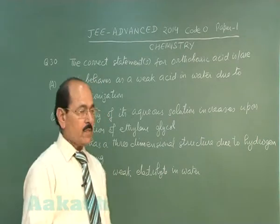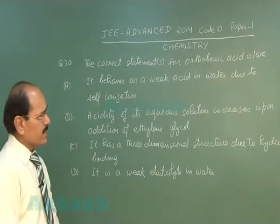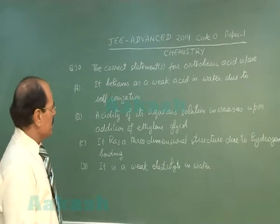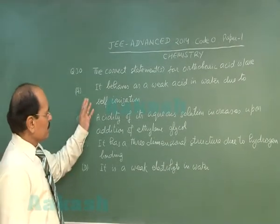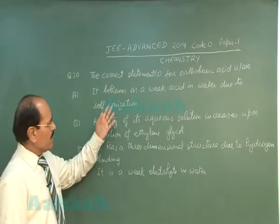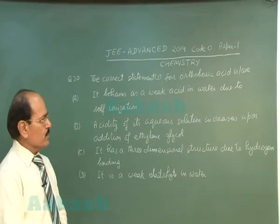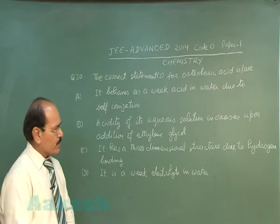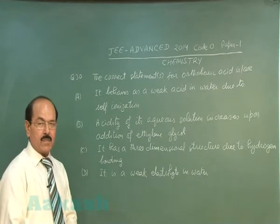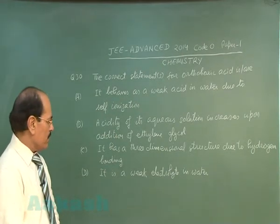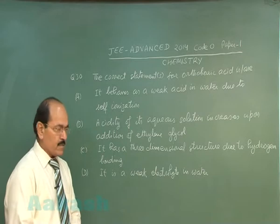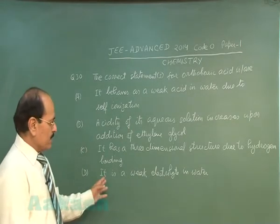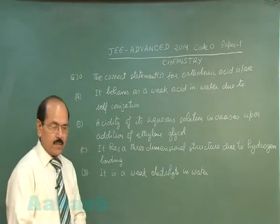Question number 30 reads: the correct statements for ortho boric acid are — these are the 4 options given: it behaves as a weak acid in water due to self ionization; acidity of its aqueous solution increases upon addition of ethylene glycol; it has a 3-dimensional structure due to hydrogen bonding; and it is a weak electrolyte in water.